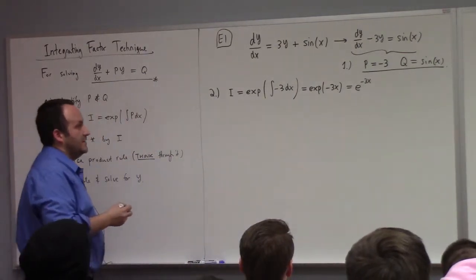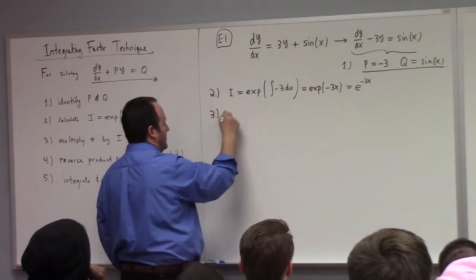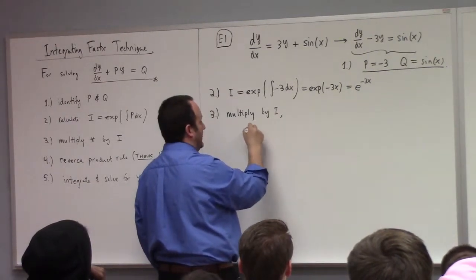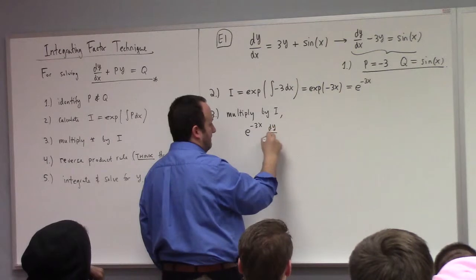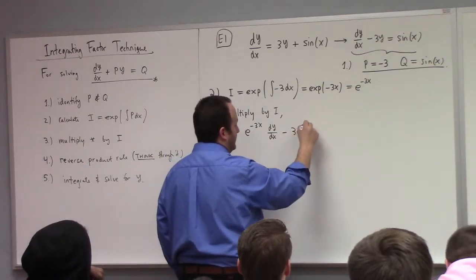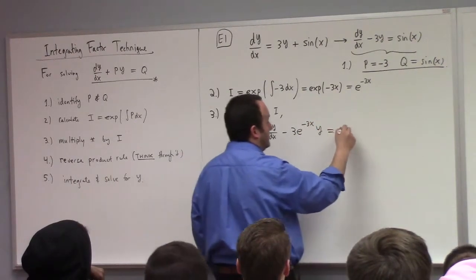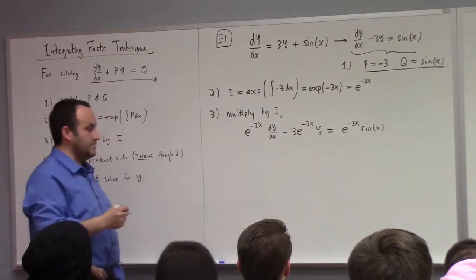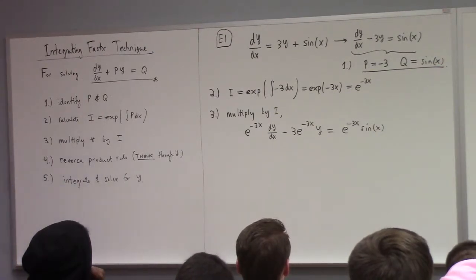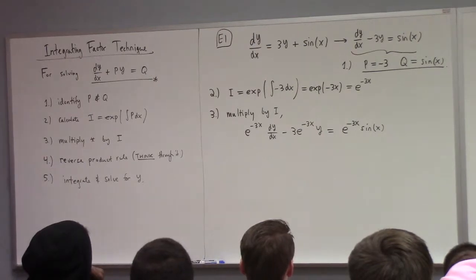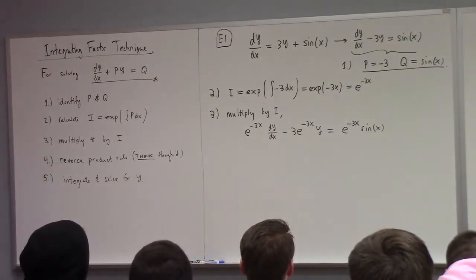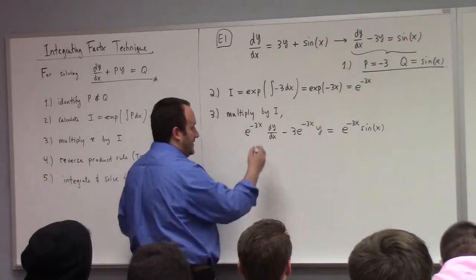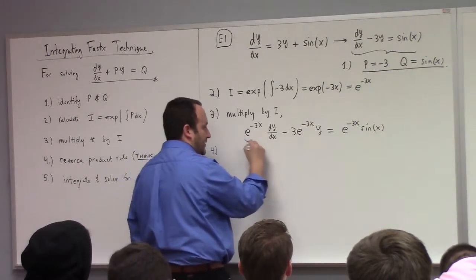Step two, i is the exponential of the integral. What's the integral of minus three dx? So there's your integrating factor, e to the minus 3x. Step three, multiply by i. That gives us e to the minus 3x dy/dx minus three e to the minus 3x y equals e to the minus 3x sin x.